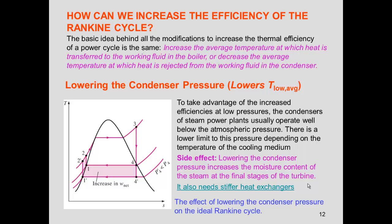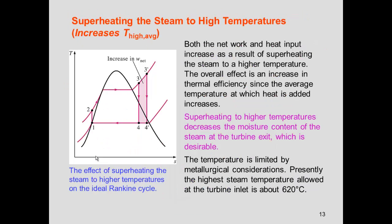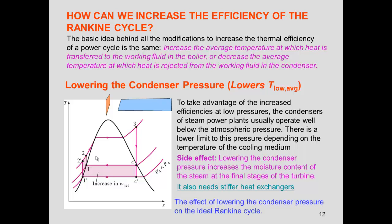Now we'll talk about how to increase the efficiency of the Rankine cycle. The net work of the cycle corresponds to the area inside the T-s diagram, so we want to increase that area. One approach is lowering the condenser pressure. By doing so, we gain extra net work from the turbine while requiring only a small amount of extra pump work, so the trade-off is favorable.